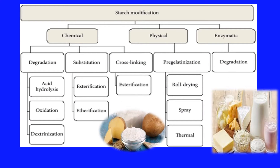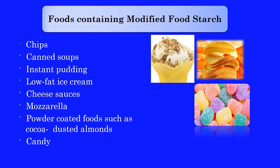This figure shows the chemical, physical, and enzymatic methods used commonly for modification of starches. The chemical process involves degradation, substitution, and cross-linking. The physical method involves pre-gelatinization followed by drying, and the enzymatic method uses specific enzymes for the degradation of starch.